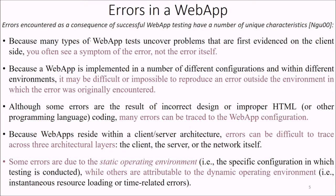There are errors in web apps. Errors encountered as a consequence of successful web app testing may have unique characteristics. Since many types of web app tests uncover problems first evidenced on the client side, you often see a symptom of an error rather than the error itself. Since a web app is implemented in many different configurations within different environments, it may be impossible or difficult to reproduce the error outside the environment where it originally occurred. Some errors result from incorrect design, improper estimates, or the programming or scripting language being used, and many errors can be traced to the web app configuration.